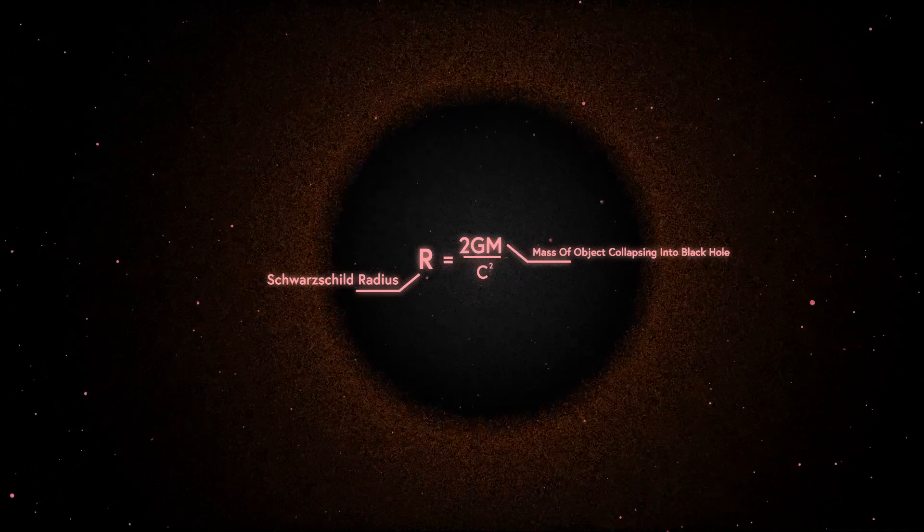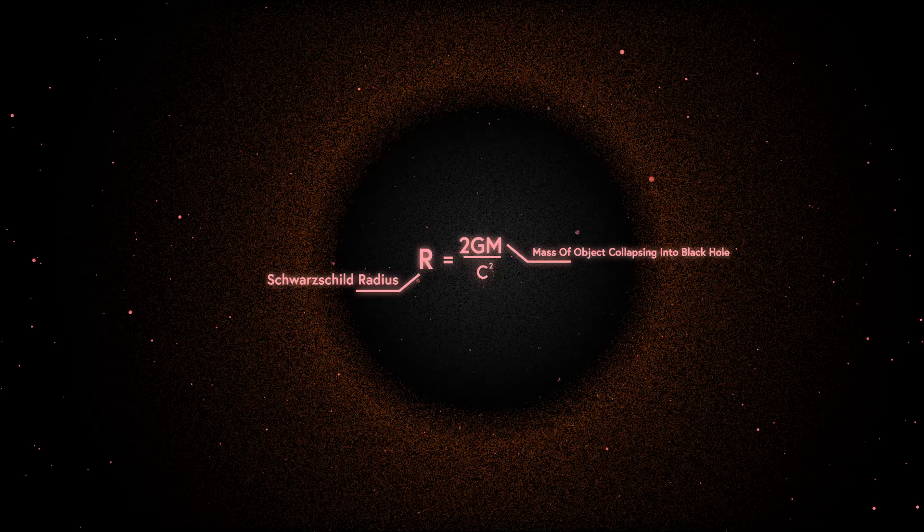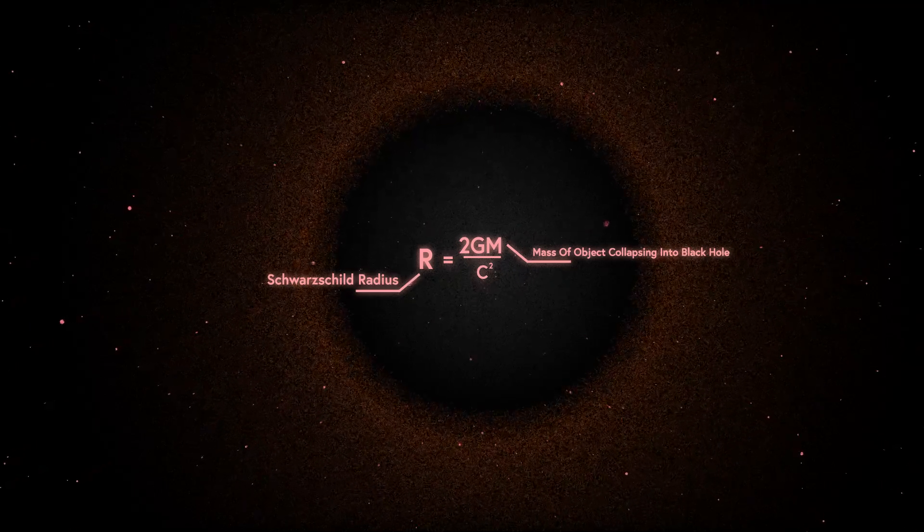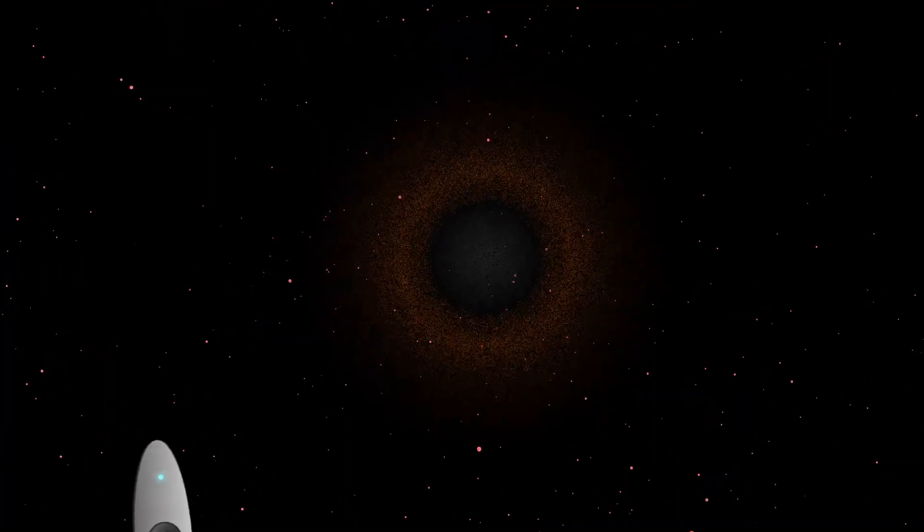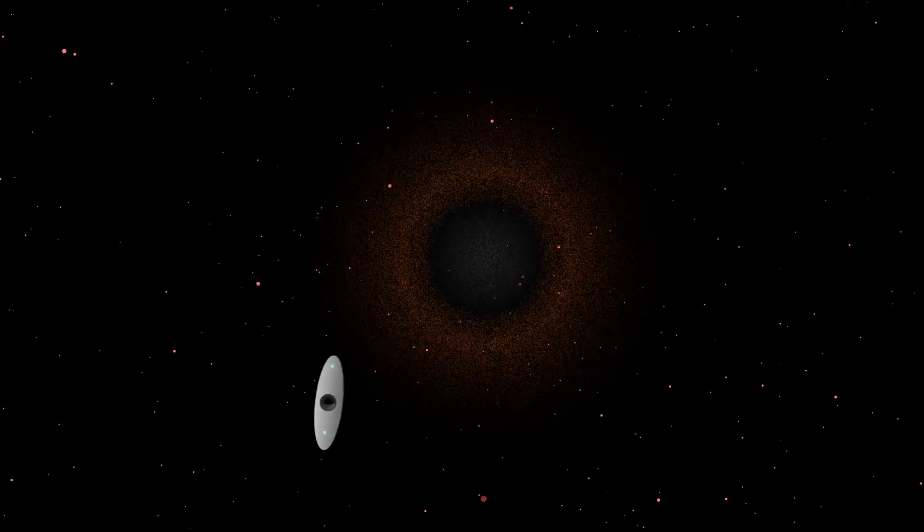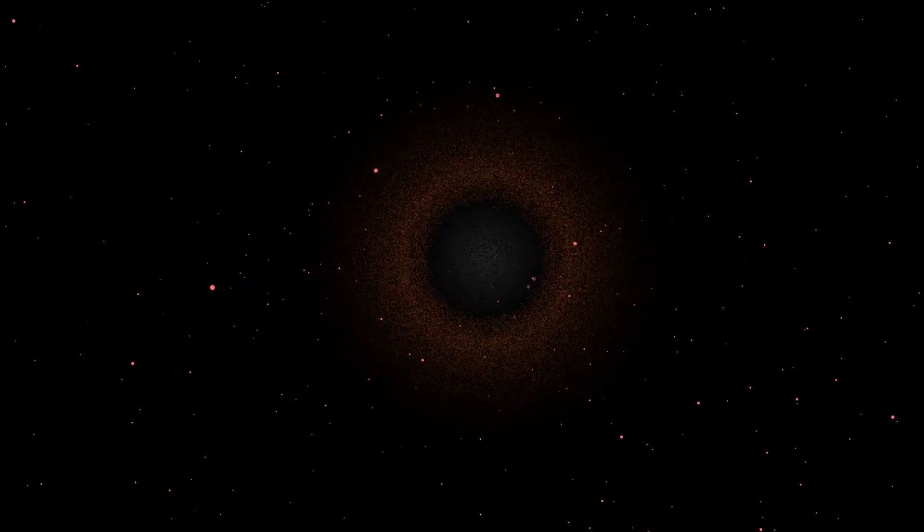But if C also changed, the balance shifts, possibly leading to a universe where black holes behave very differently from how we understand them today. A weaker G could have the opposite effect, making black holes harder to form and reducing their prevalence, further altering the landscape of our universe.